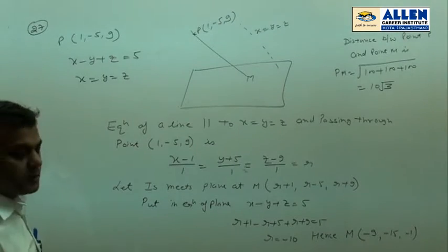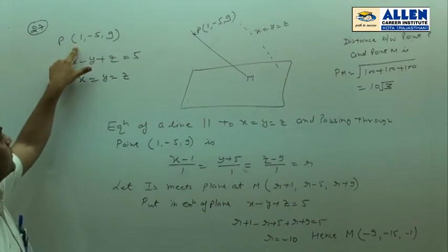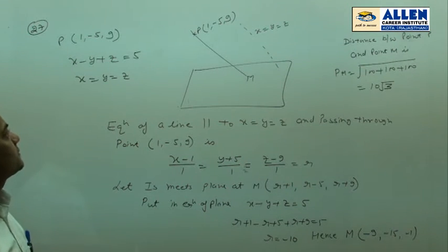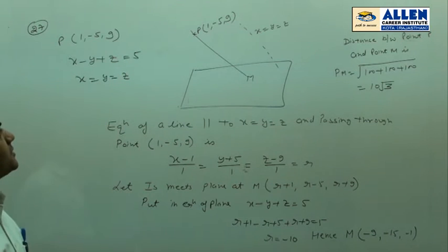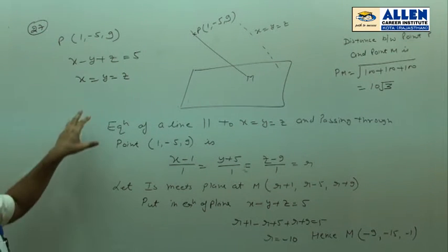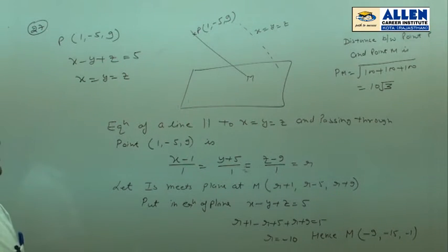In question number 27, we have been given coordinates of a point P (1, -5, 9). And we need to find the distance of this point P from the plane x minus y plus z equal to 5. And that distance is measured along the line x equal to y equal to z.